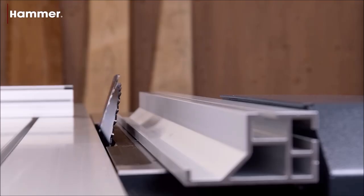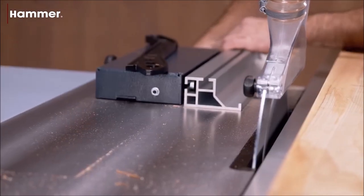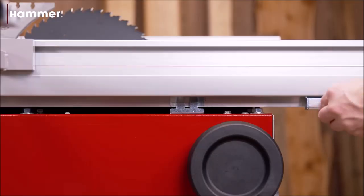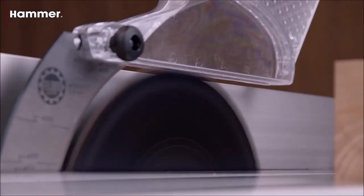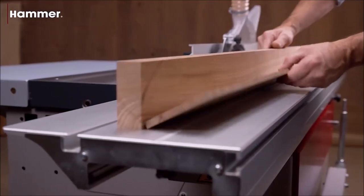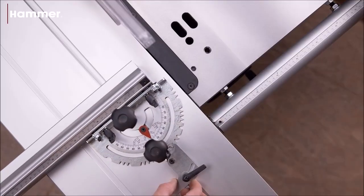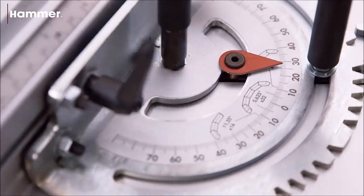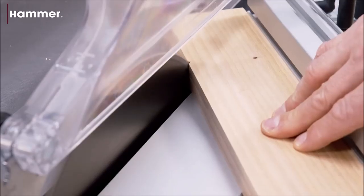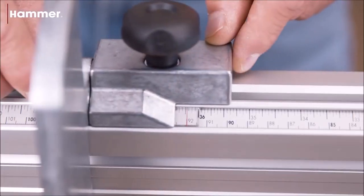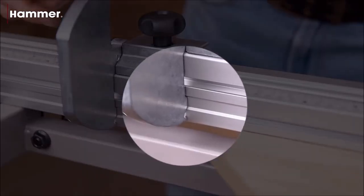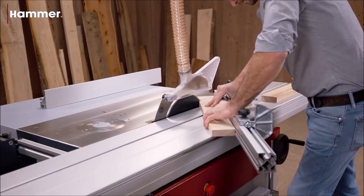The scoring unit ensures chip-free cuts on laminated workpieces, and the scoring blade's width can be adjusted accurately. The saw/spindle table is made from solid cast iron, ensuring a vibration-free and precise cutting and molding experience. The table's opening allows the use of large diameter tools below the surface level.